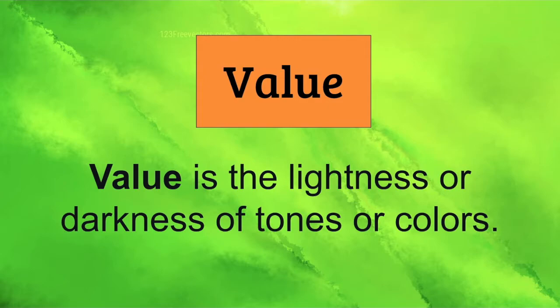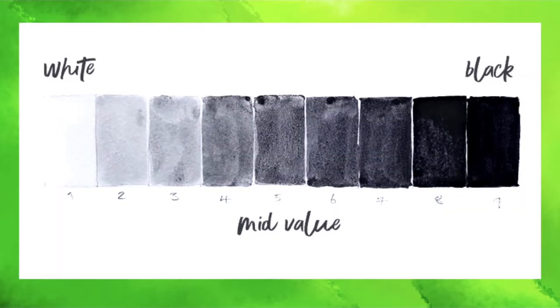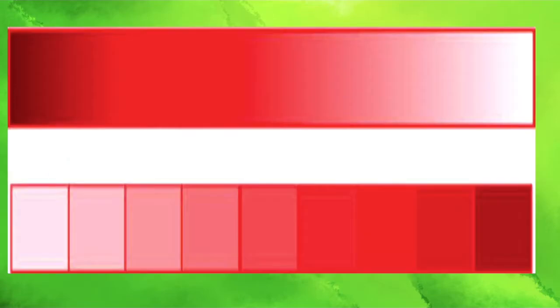Next technical element is value. Value is the lightness or darkness of tones or color. So for example we have white to black here. It goes through seven different values of black. See how black gradients back into white? This is to show value.